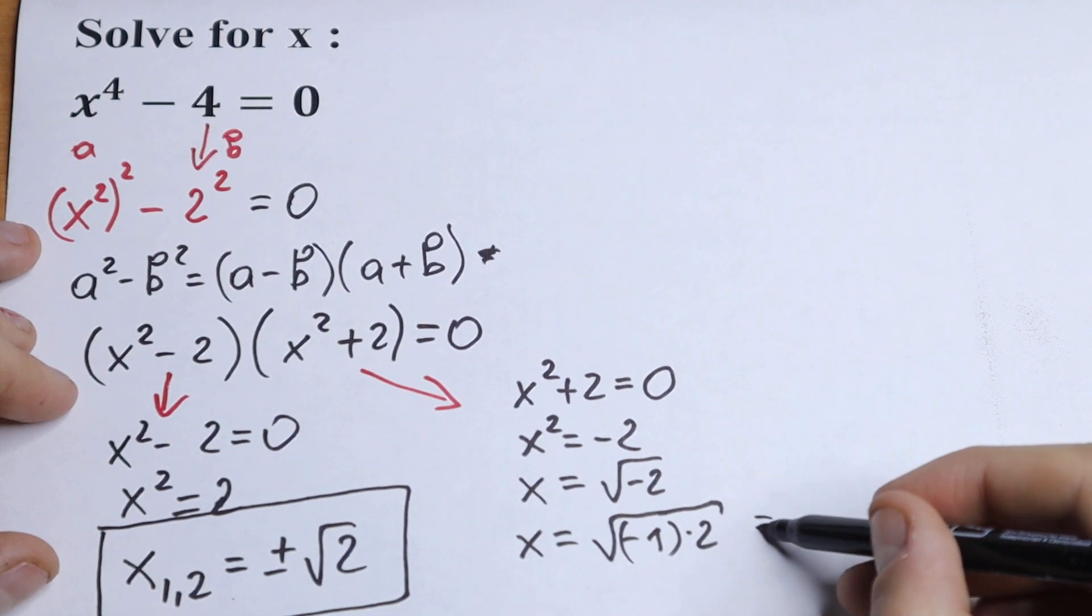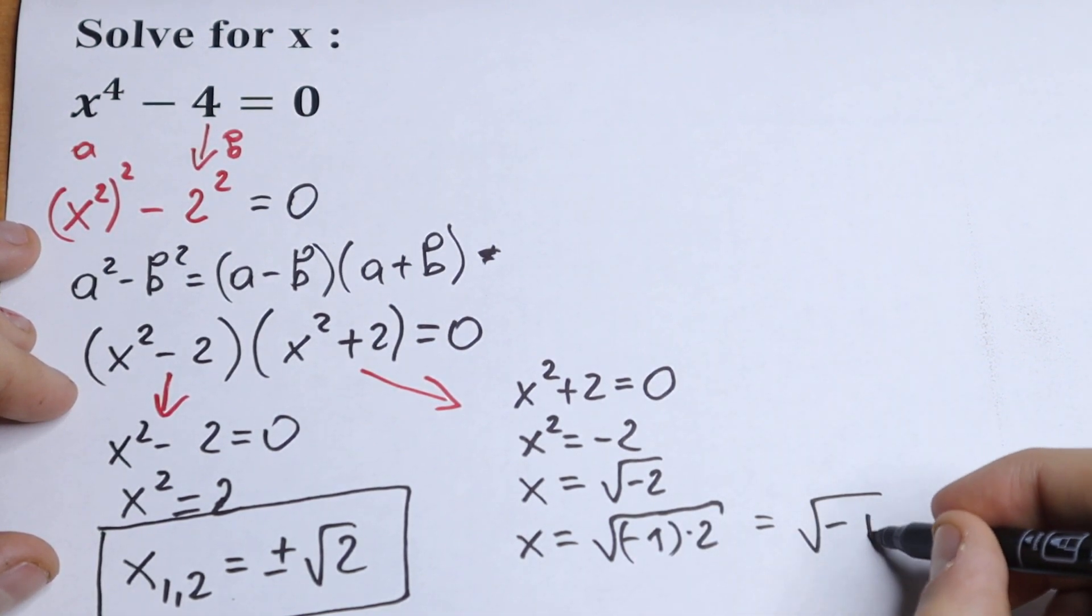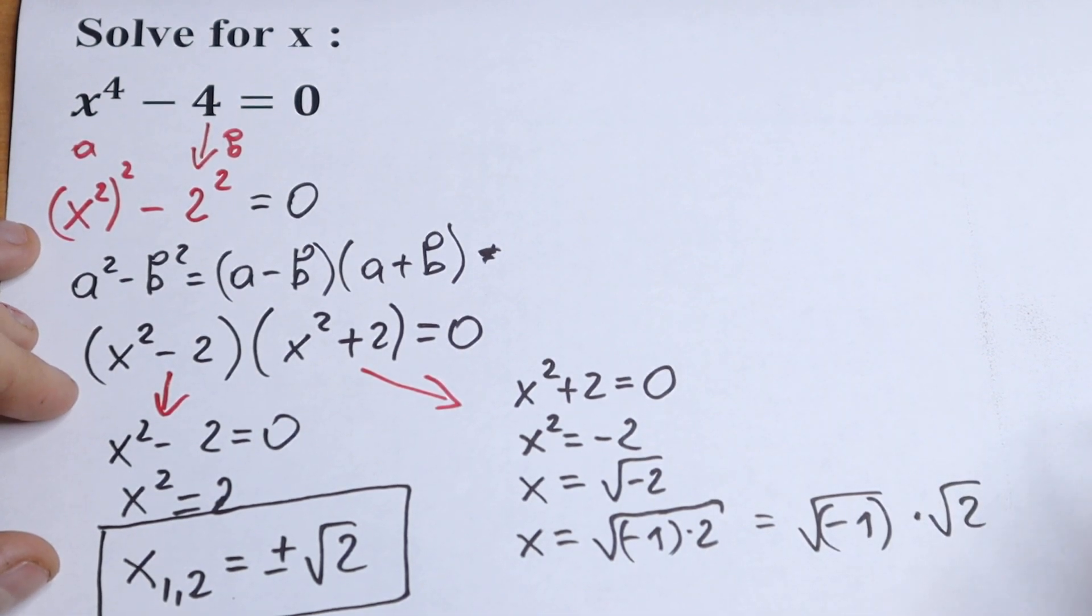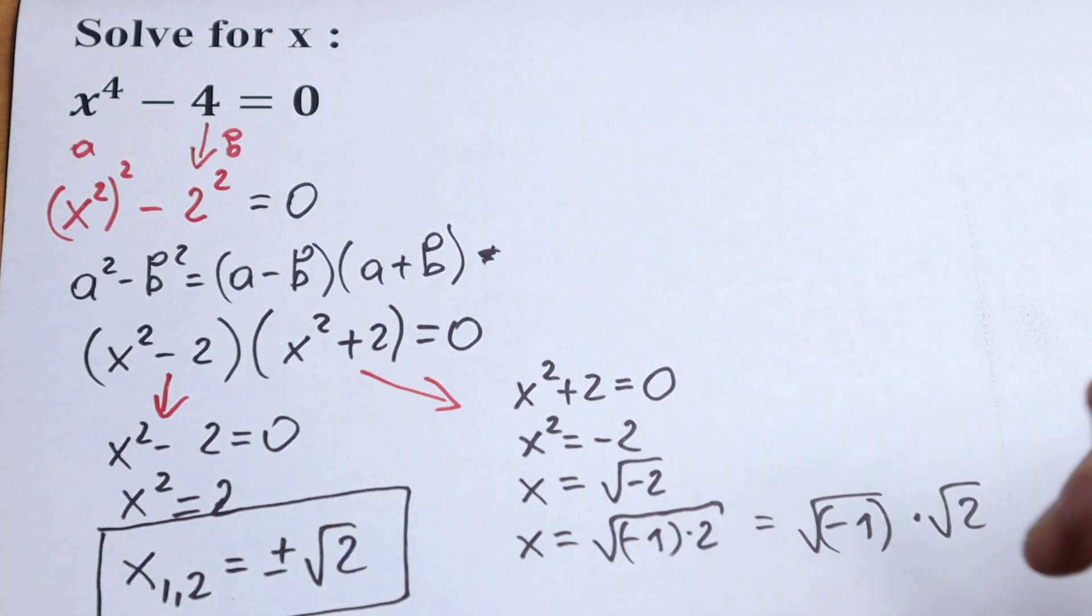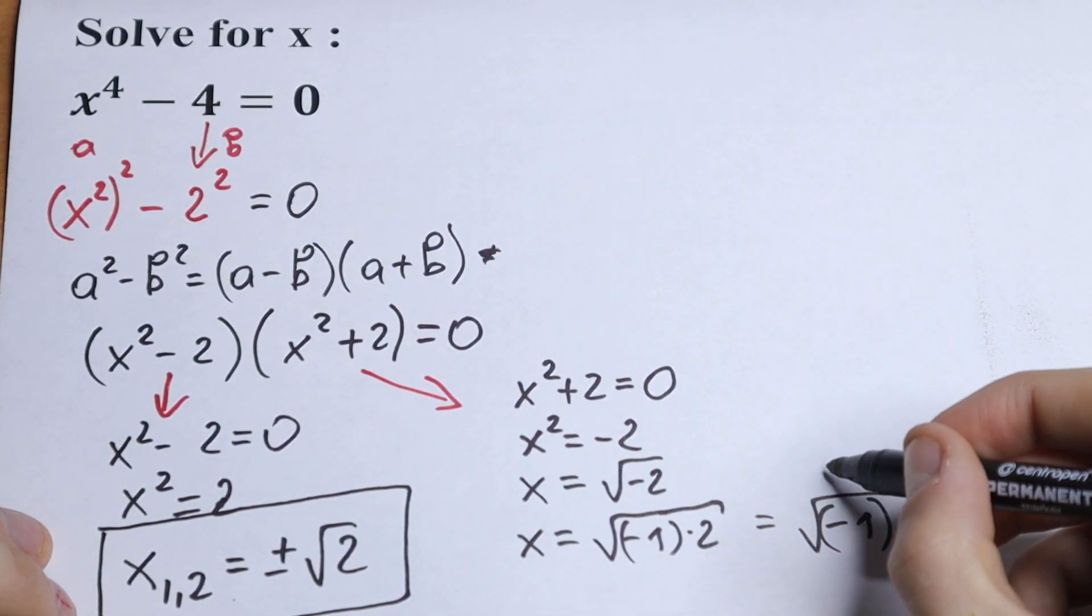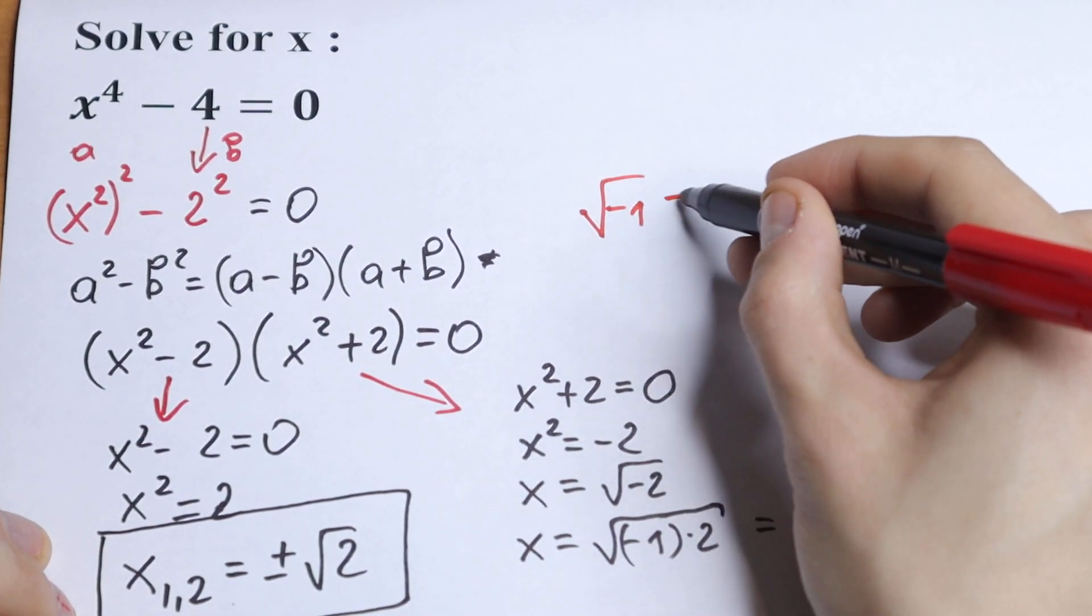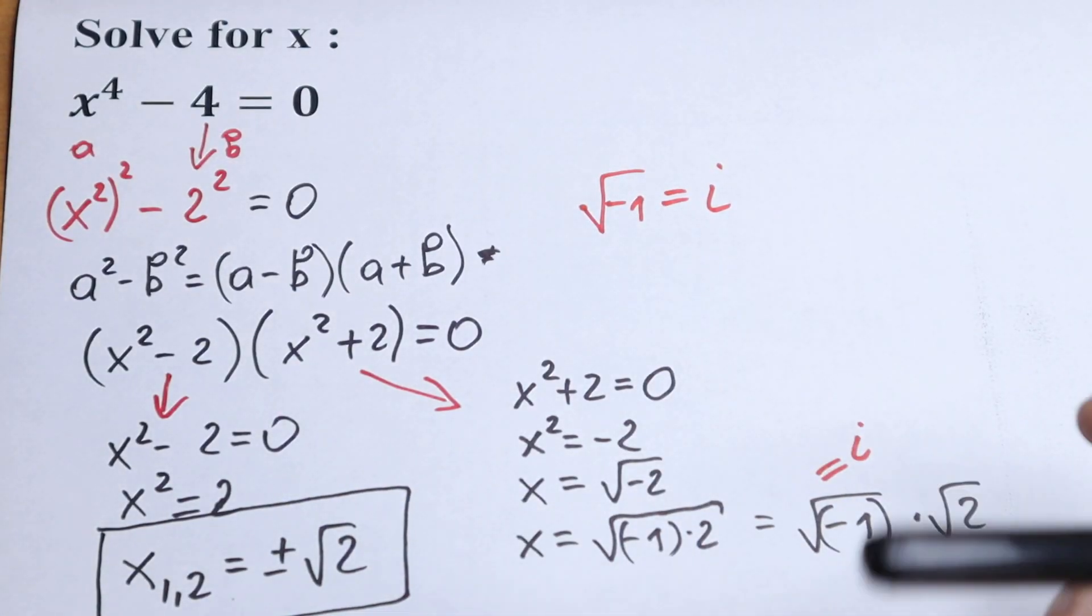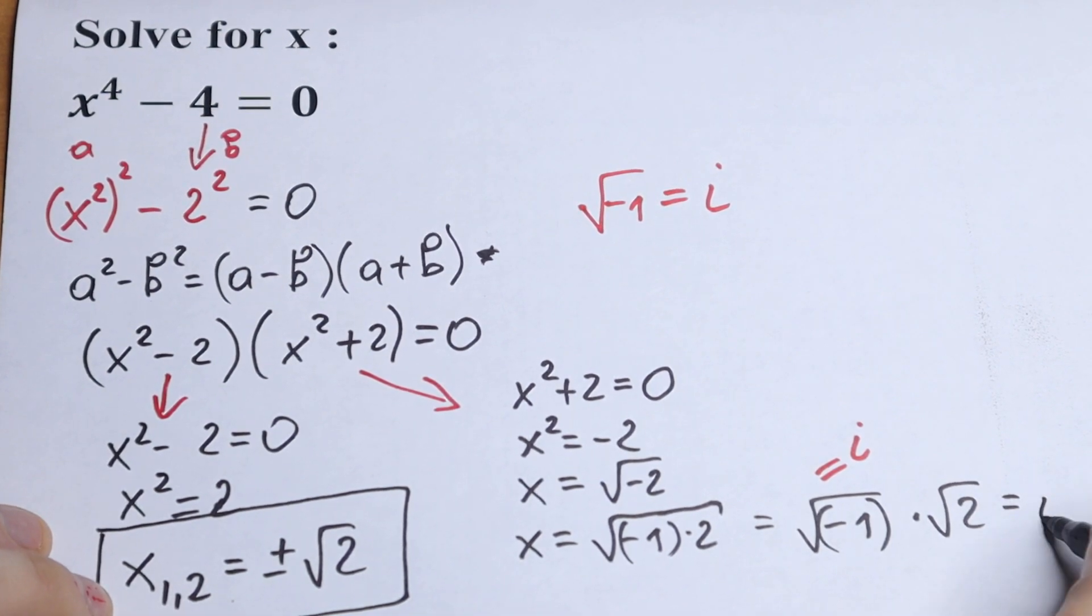Simplifying this a little bit we can write this as square root of minus 1 times square root of 2. The main thing in complex theory is that this square root of minus 1 equal to i. So remember this, square root of minus 1 equal to i.